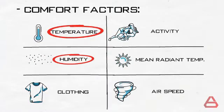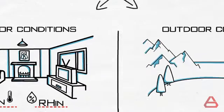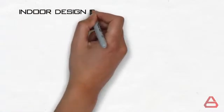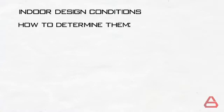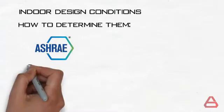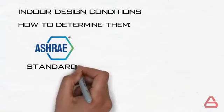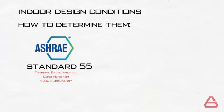Therefore, most of the time when indoor design conditions are mentioned, people refer to indoor temperature, T-in, and indoor humidity, RH% in. The conditions can be determined based on a certain standard from ASHRAE, named ASHRAE Standard 55, titled Thermal Environmental Conditions for Human Occupancy.